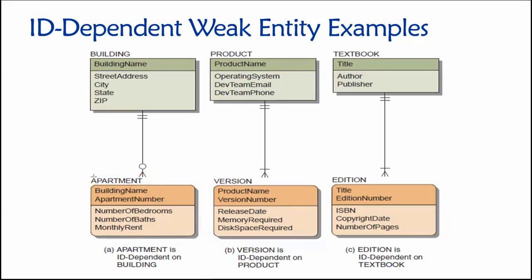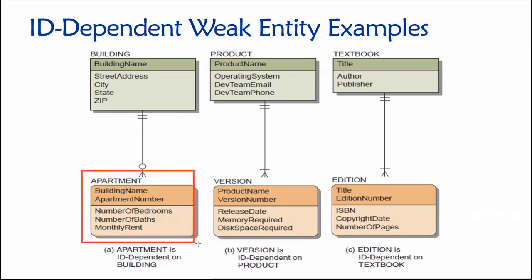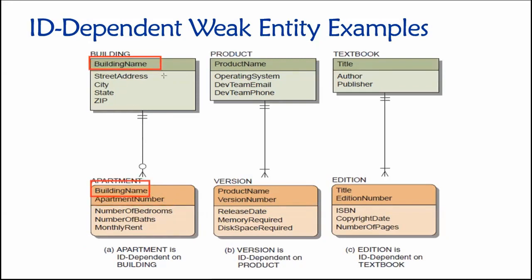This is an ID-dependent weak entity. Every row in this apartment table depends for its existence on the prior existence of a building. Once we know the building name, we can identify the specific apartment with an apartment number — like building B, apartment 14. That's how we can uniquely identify an apartment. Its key consists in part of the primary key from another table.